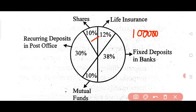10%, 30%, 10%, 10% — to calculate the amount, you do 10 divided by 100, multiplied by 1 lakh, which gives 10,000 rupees.